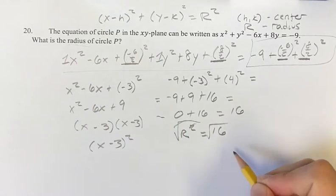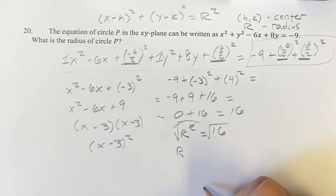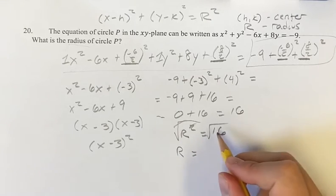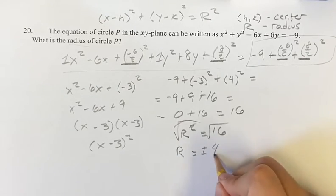Easy enough. Square root of r squared is just r. That's what we're doing in the first place. And then right here, we're going to be taking positive, negative 4.